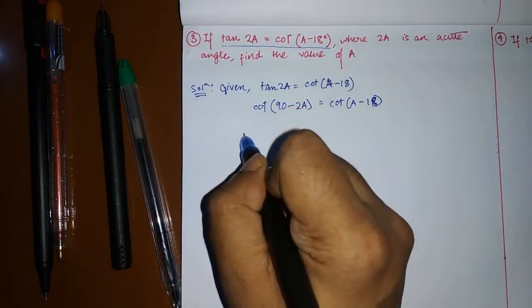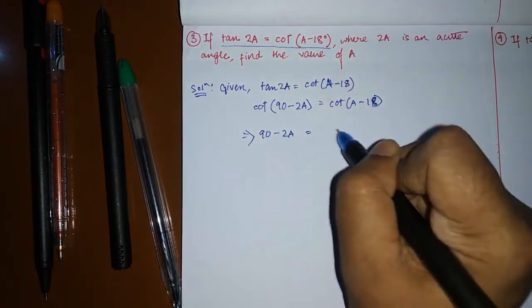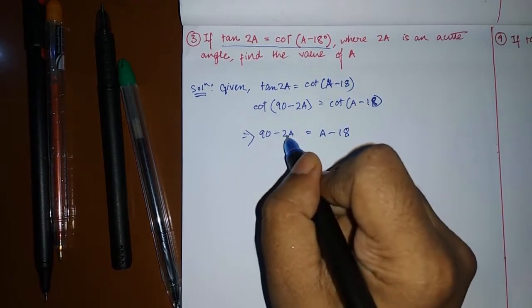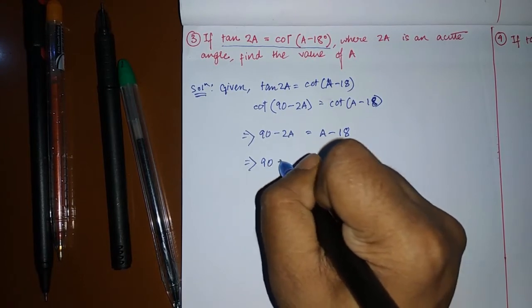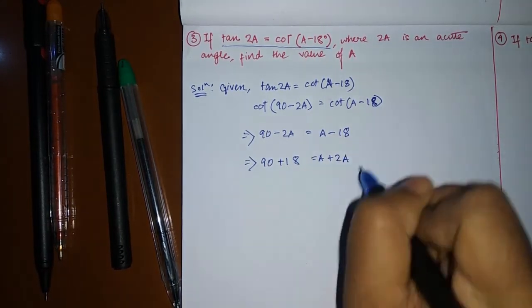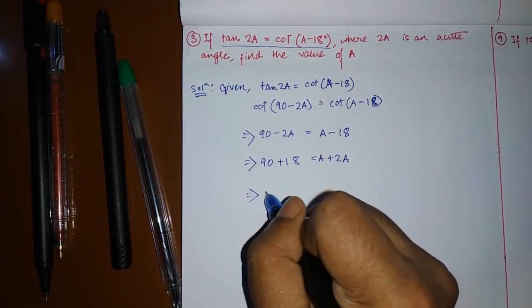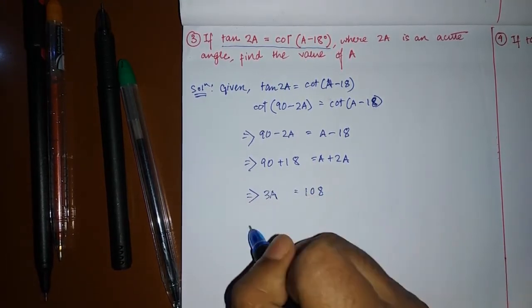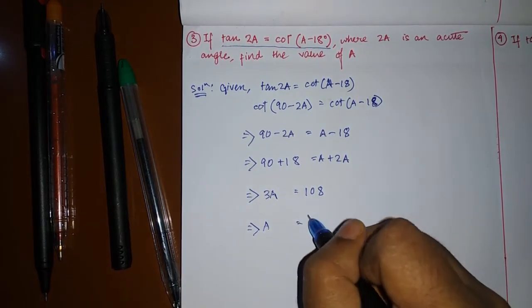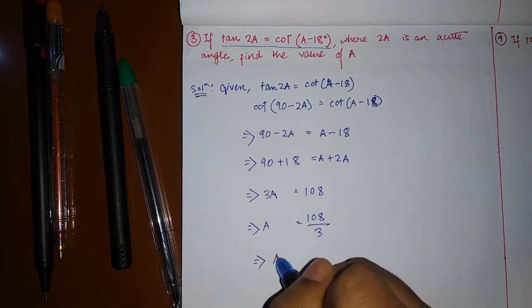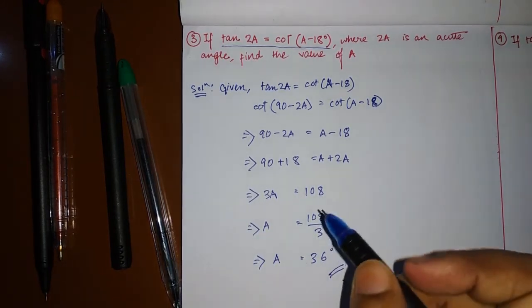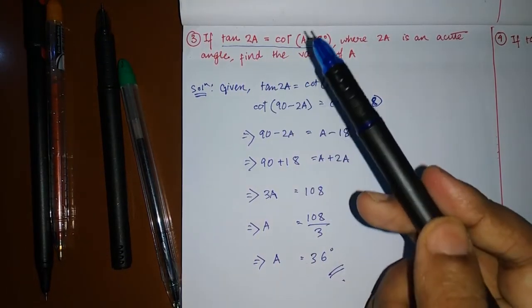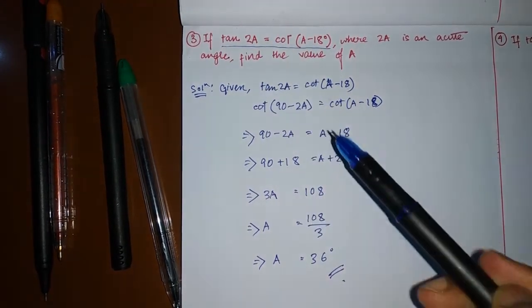Remove cot from both sides: 90° − 2a = a − 18°. Bring −2a to the right and −18° to the left: 90° + 18° = a + 2a, which gives 108° = 3a. Divide both sides by 3: a = 36°. All you need to do is convert the trig ratios into the same ratio, simplify, and you'll end up with the answer.